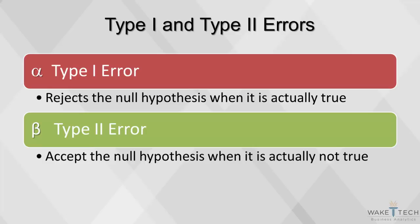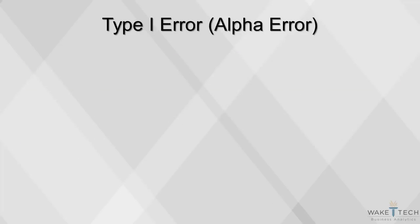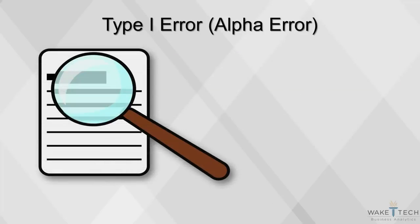Remember that a different sample can give a completely different result. A sample mean is likely to fall in the confidence interval only 95% of the time, so the inferences drawn from the sample may be wrong. The type 1 error occurs when a researcher thinks he or she has found a significant result, but really that result is due to chance. It's similar to a false positive on a drug test.